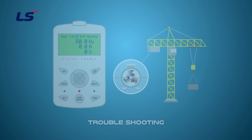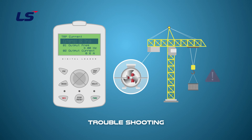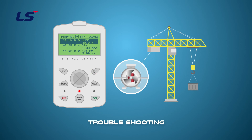If the open current or output frequency is not reached and stays for more than 10 seconds, external brake trip will occur. In this case, lower the percent value of the output current setting so that the drive output current value will be satisfied.